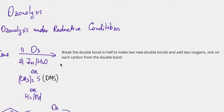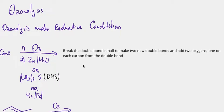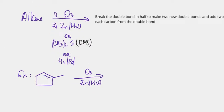Here is how to do this: we need to break the double bond in half to make two new double bonds. This is a little different from the other alkene reactions we learned — most of them just turn a double bond into a single bond, but here we break it in half and add two oxygens, one on each carbon from the double bond. I imagine breaking the double bond in half and get basically two new halves, then add an oxygen on each side.